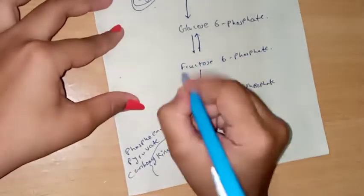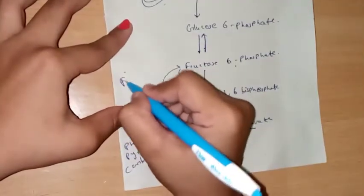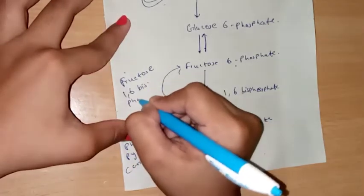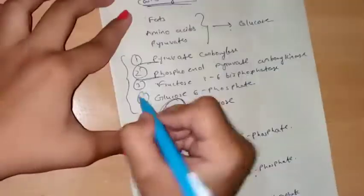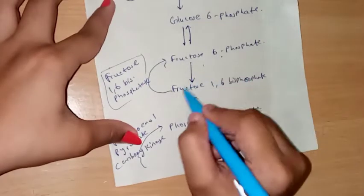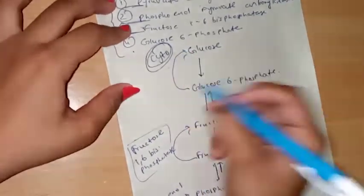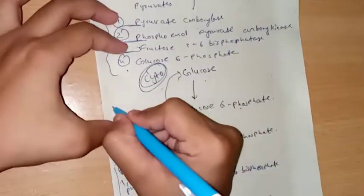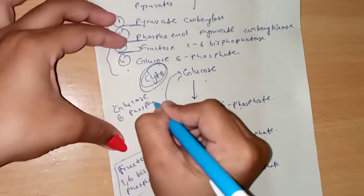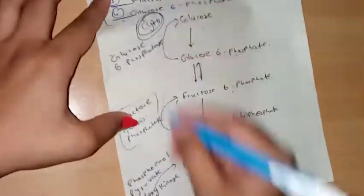Fructose-1,6-bisphosphate is turned into fructose-6-phosphate with the help of fructose-1,6-bisphosphatase — the third enzyme — which handles this irreversible reaction. Finally, the fourth enzyme, glucose-6-phosphatase, converts glucose-6-phosphate to glucose, completing the gluconeogenesis pathway.